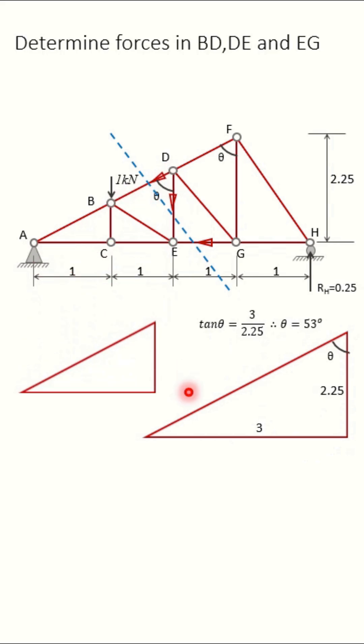Now in this triangle, this theta is same, 53 degrees. And this side is 2, this side is 2. So DE will be, this length is 1.5.